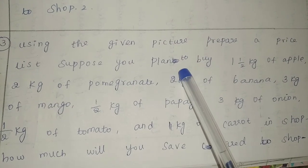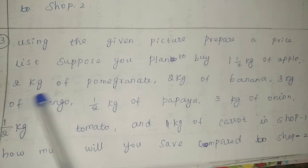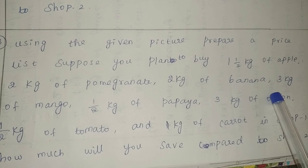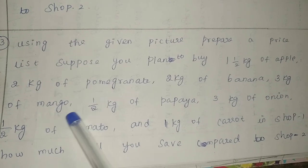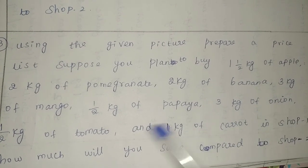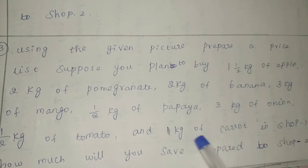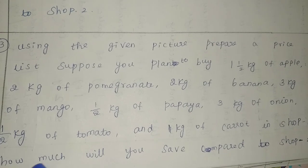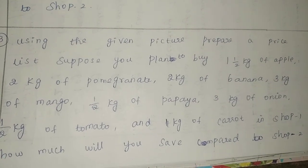Suppose you plan to buy 1.5 kg of apple, 2 kg of pomegranate, 2 kg of banana, 3 kg of mangoes, 1.5 kg of papaya, 3 kg of onion, 1.5 kg of tomato, and 1 kg of carrot in shop 1. How much did you save compared to shop 2?